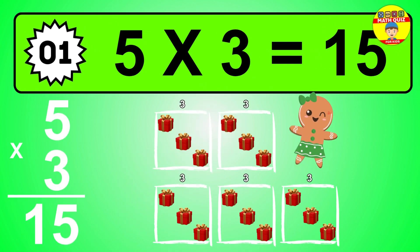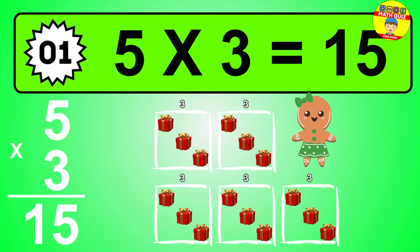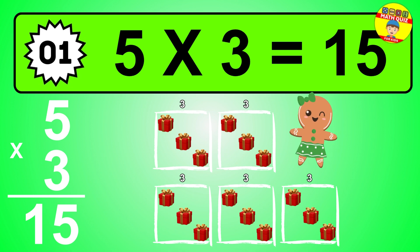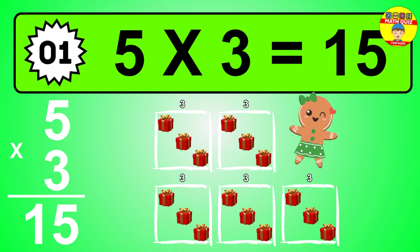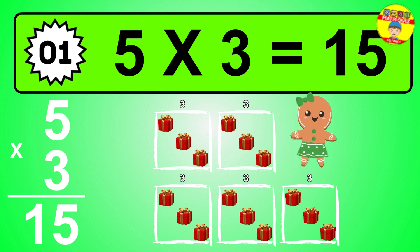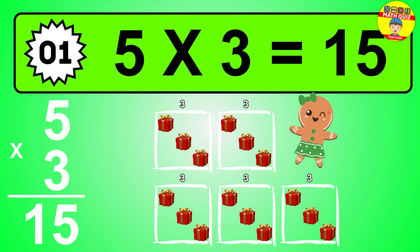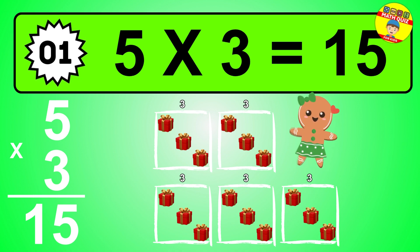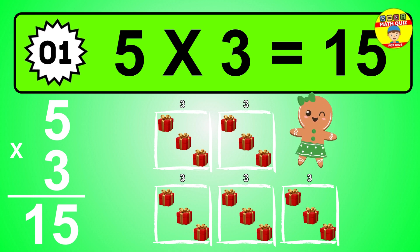The answer is five times three is fifteen. To calculate, we have five groups with three balls each one. So how many balls do we have? Fifteen balls.